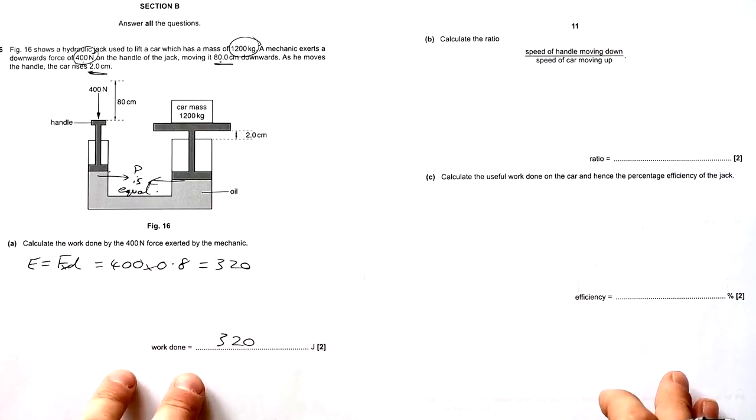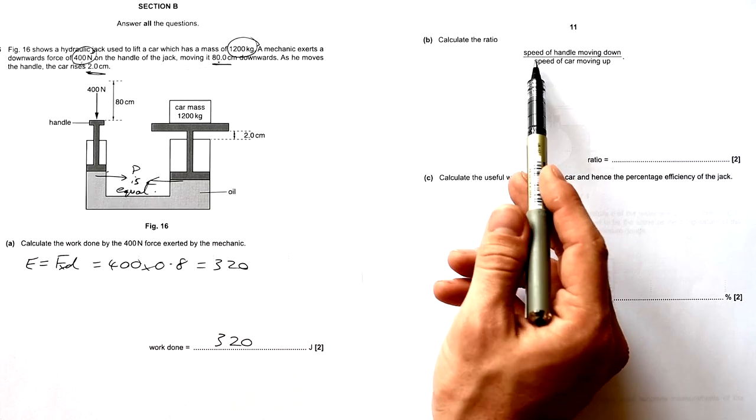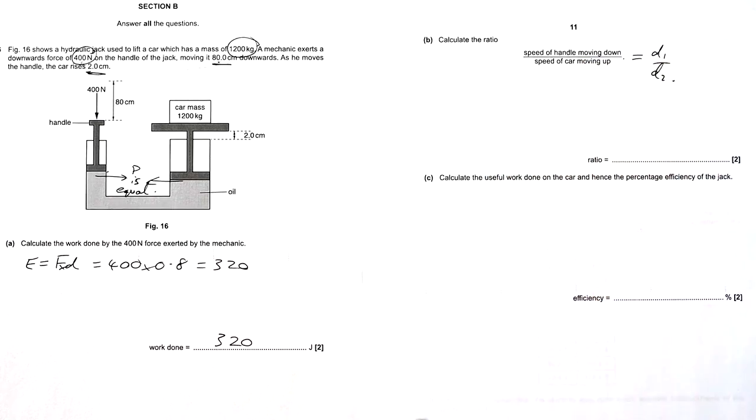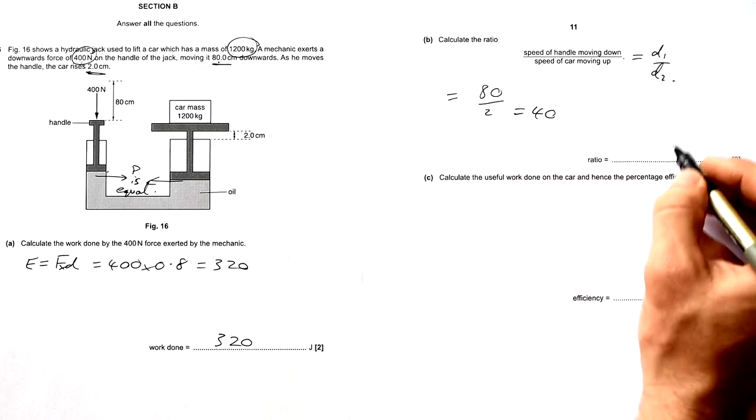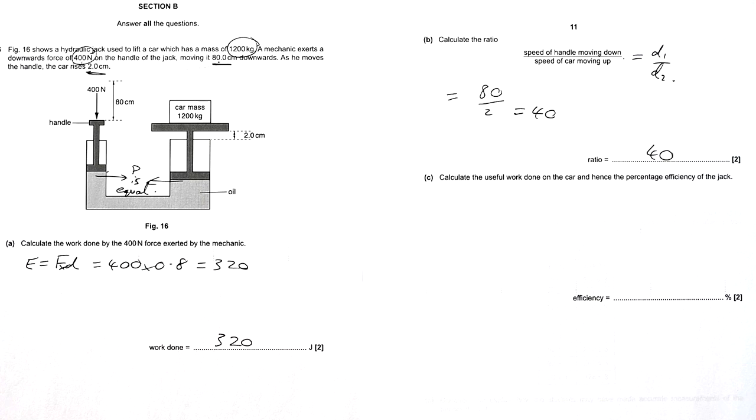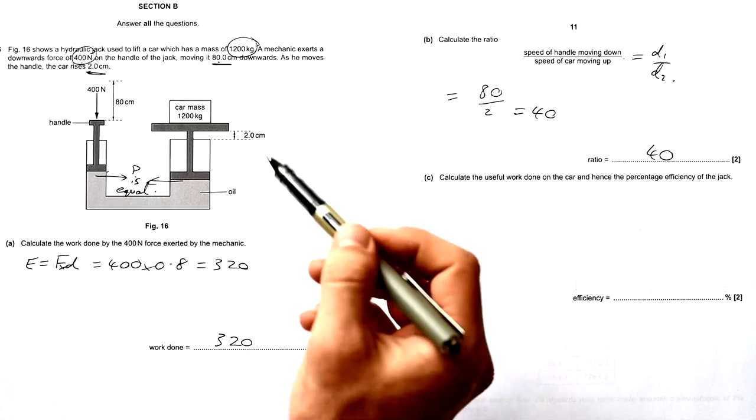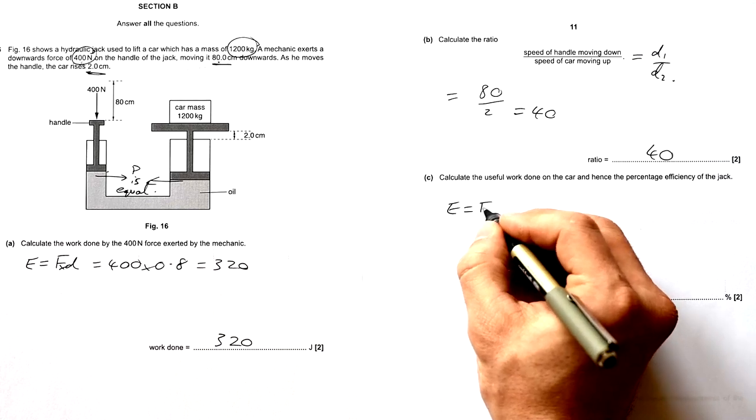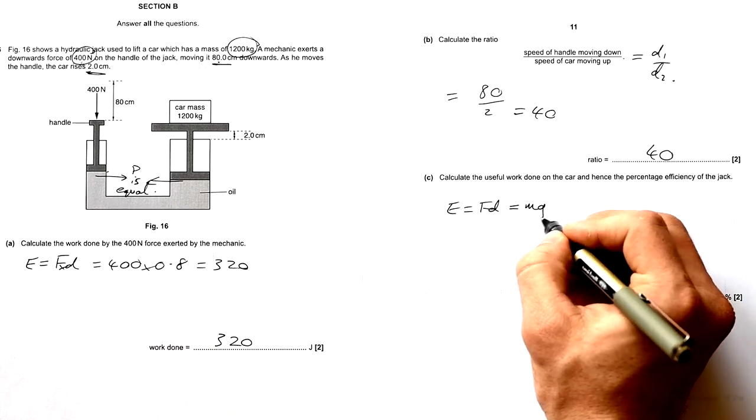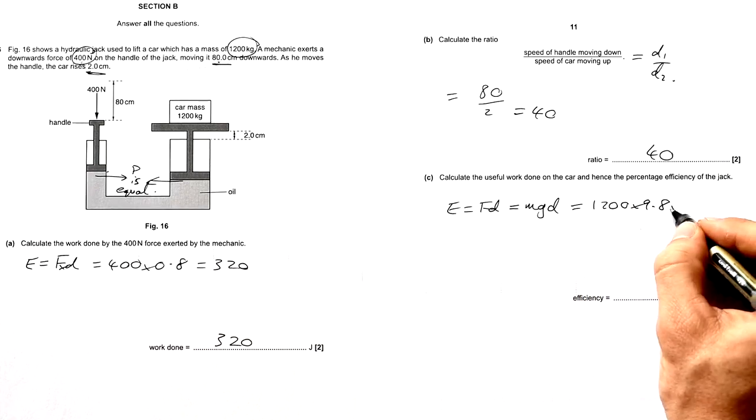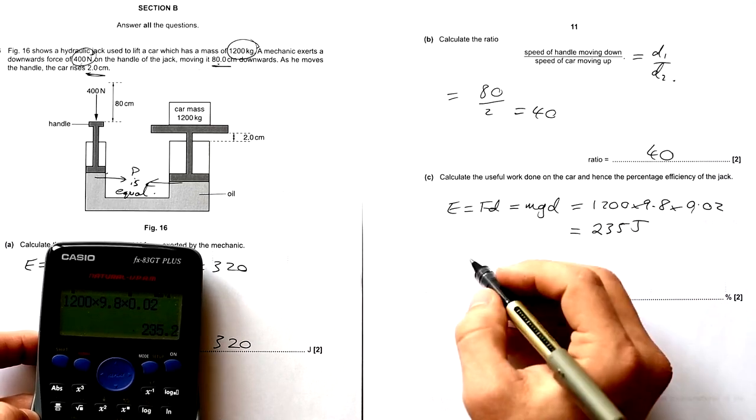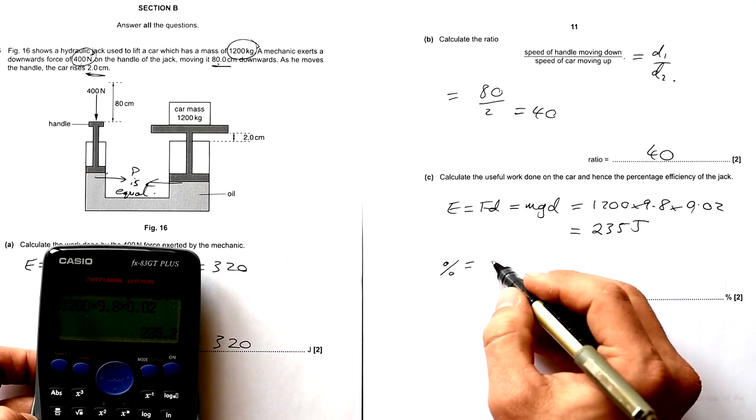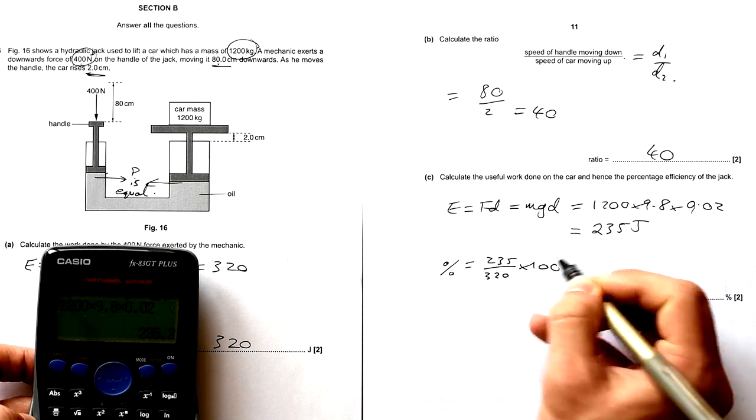Next we calculate the ratio: speed of handle moving down divided by speed of car moving up. This is a cheeky question because speed is meters per second but we know the time is going to be the same for both. This is just equal to the ratio of the distances moved. The handle is moving 80 centimeters, the car is rising two centimeters. So this is just 80 divided by 2, so that's 40. Calculate the useful work done on the car and hence the percentage efficiency. E equals FD, so F is mg. That's 1200 times 9.8 times 0.02, gives us 235 joules. Efficiency is the bit divided by the lot: useful energy out divided by total energy in times 100. That gives us 74%.